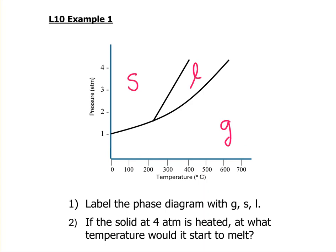If the solid is at four atmospheres and it's heated, at what temperature does it start to melt? To start to melt, we want it to hit this line.